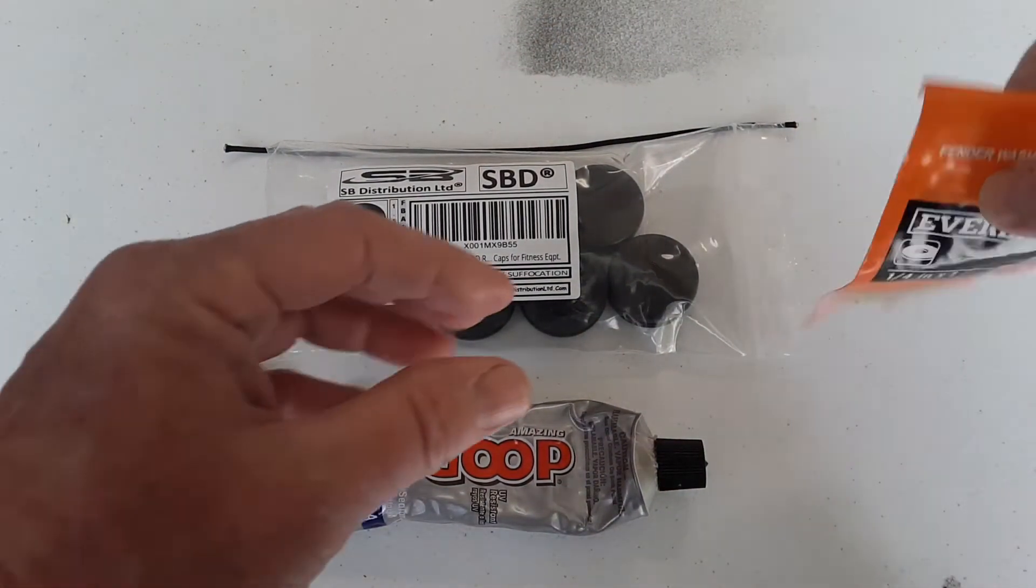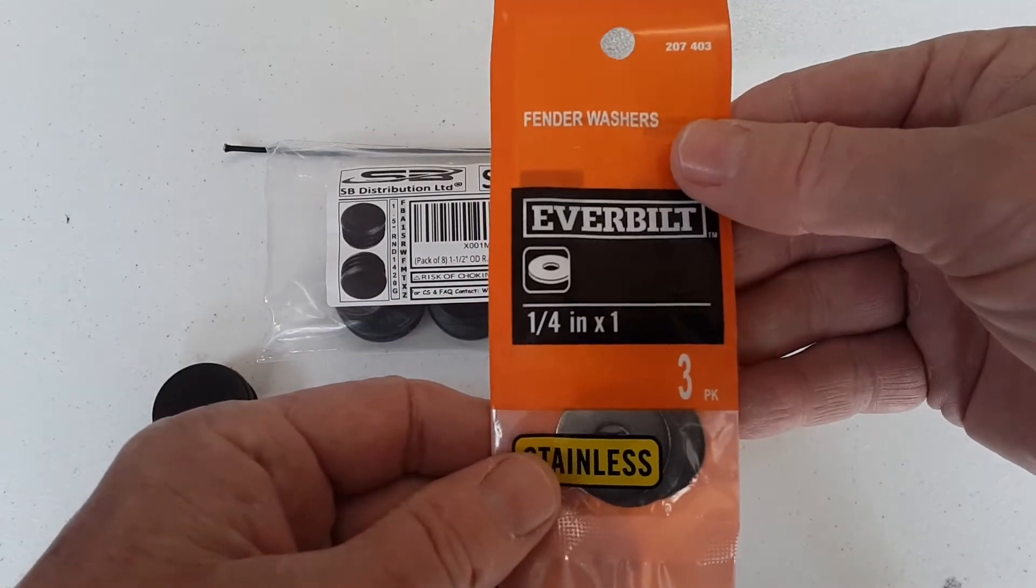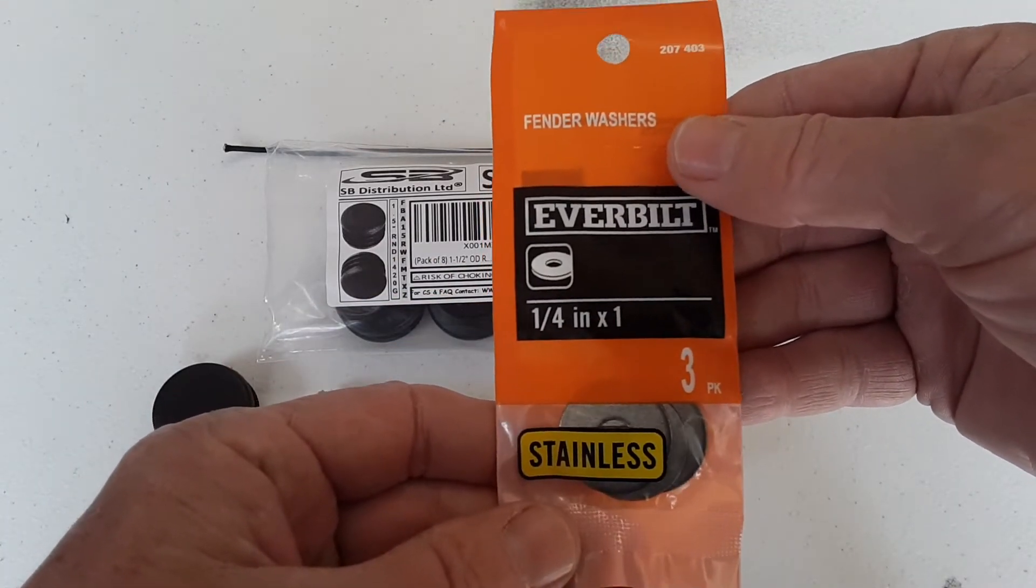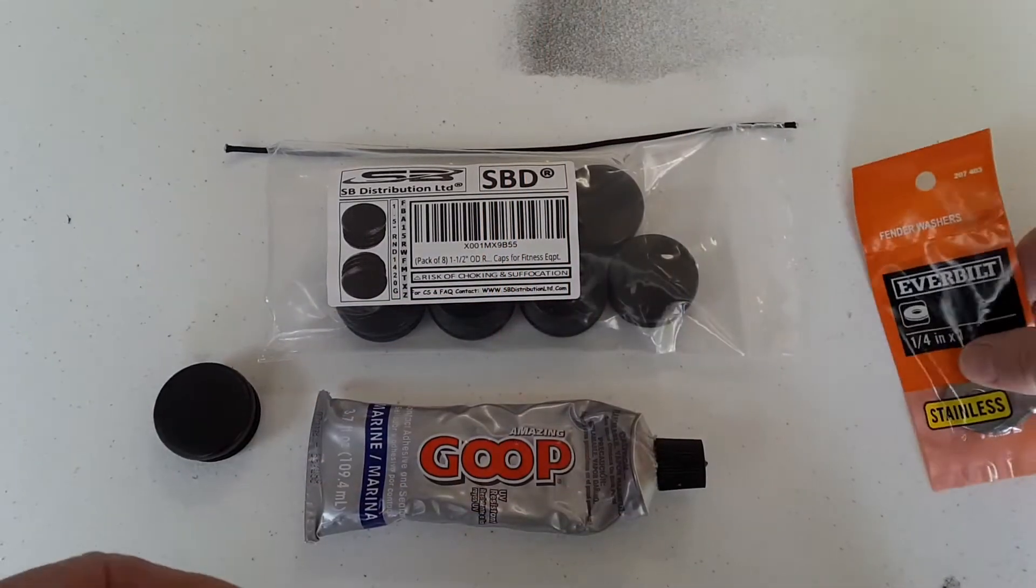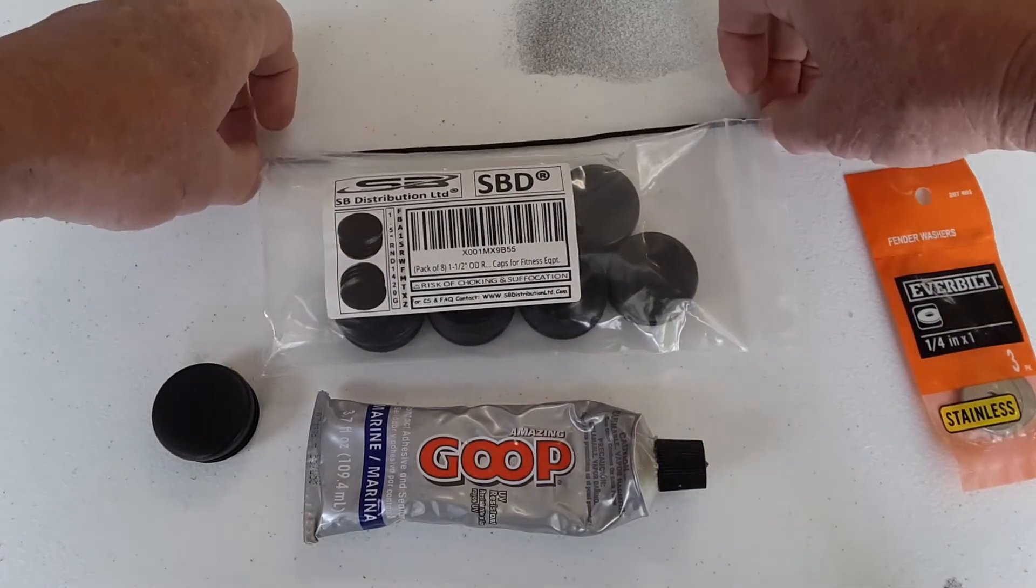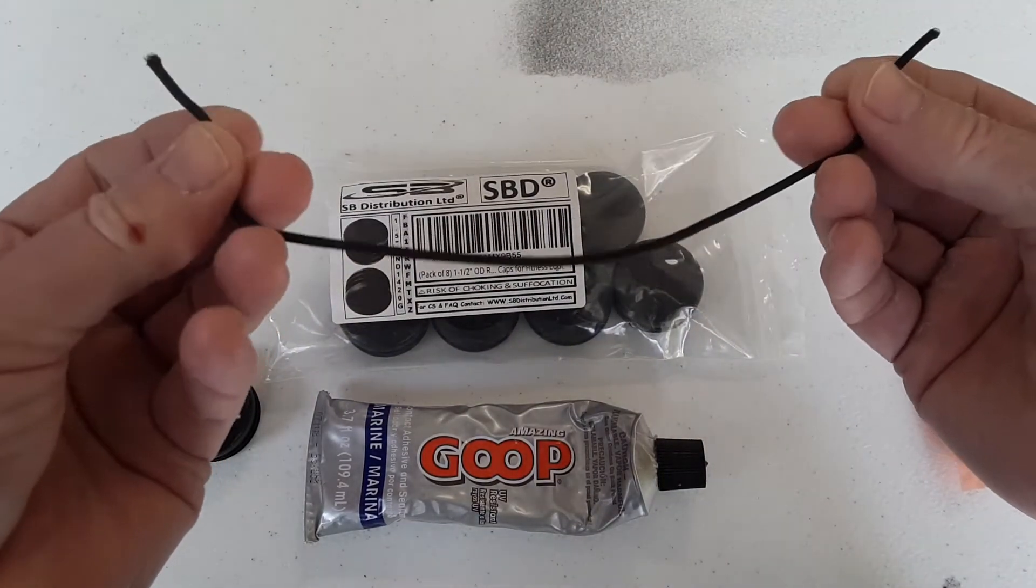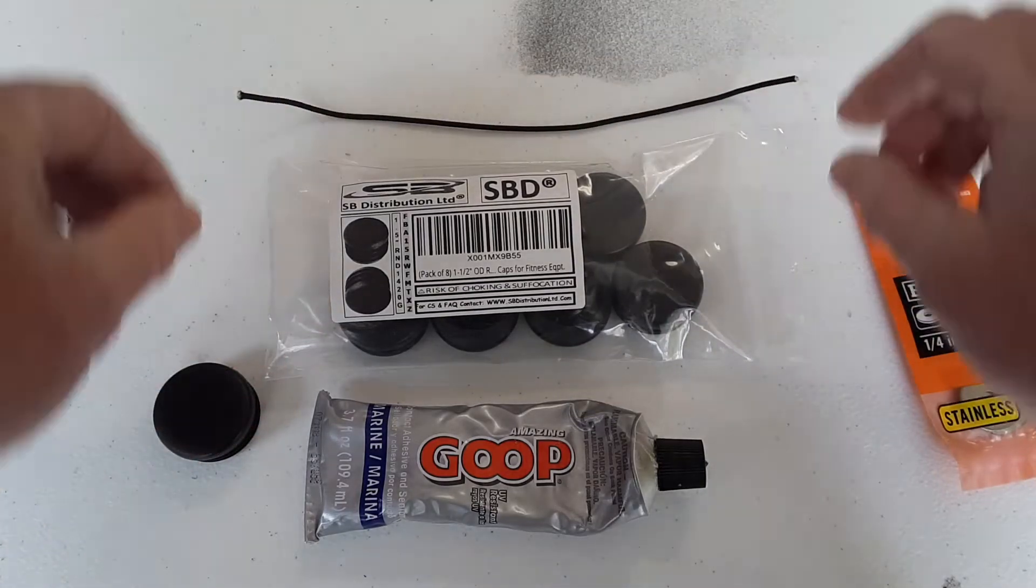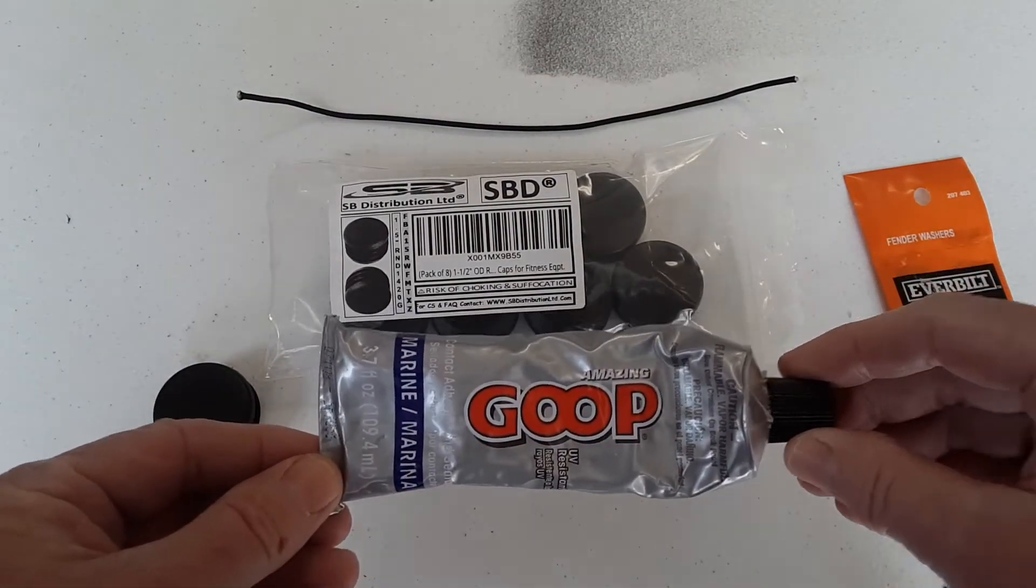Then I'll also be using these one quarter inch by one inch diameter stainless steel fender washers, and then ten inch sections of one eighth inch diameter paracord, and then submarine goop.